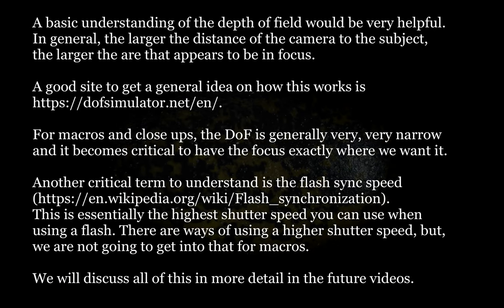A basic understanding of depth of field would be very helpful. In general, the larger the distance of the camera to the subject, the larger is the area that appears to be in focus. A good site to get a general idea on how this works is given in the description. For macros and close-ups, the depth of field is very, very small, and it becomes critical to have the focus point exactly where we want it. Another critical term to understand is the flash sync speed — a link to Wikipedia is given in the description below. This is essentially the highest shutter speed you can use when using a flash. There are ways of using a higher shutter speed, but we are not going to get into that for macros.